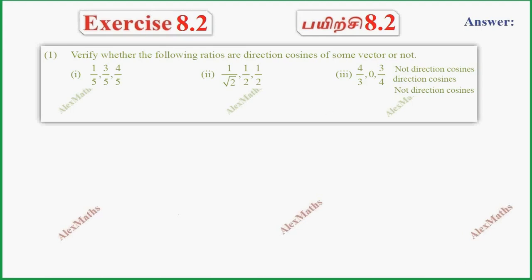Hi students, this is Alex here. Exercise 8.2, question number 1: verify whether the following ratios are direction cosines of some vector or not. When we have direction cosines, they are usually named L, M, N.